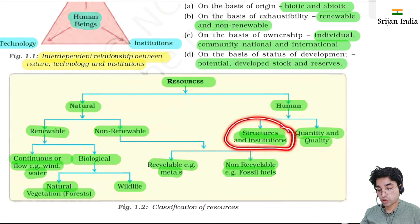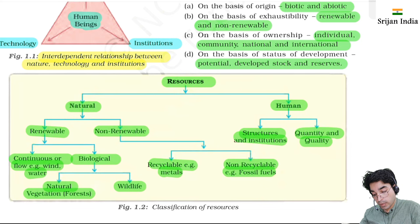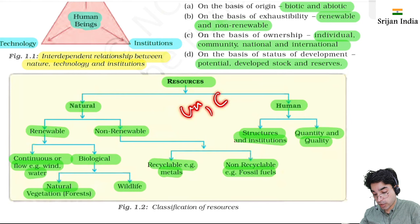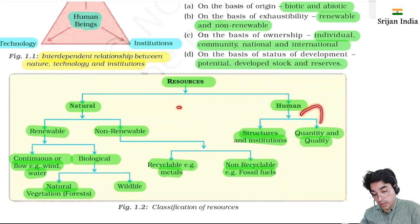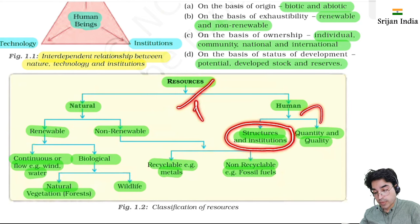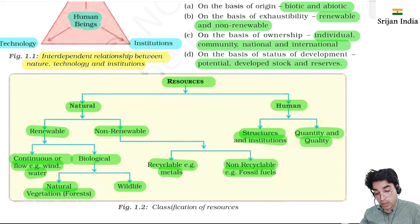Under human resources are structures and institutions. For example, constitutional bodies - UPSC is a constitutional body, the Election Commissioner is a constitutional body, Finance Commission under Article 280 is a constitutional body, and some are statutory bodies. All these bodies are institutions. Parliament is an institution, the Prime Minister's office is an institution - these are also resources.